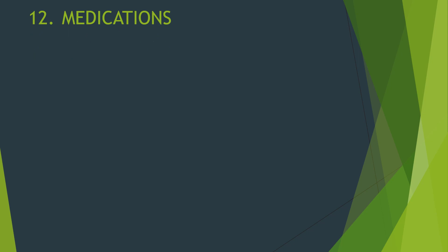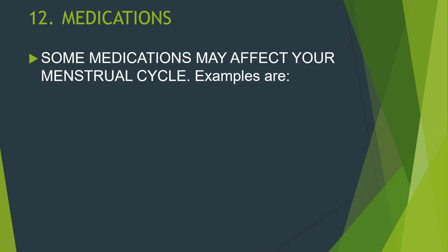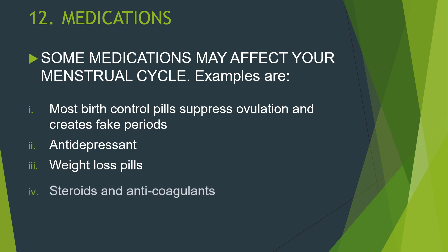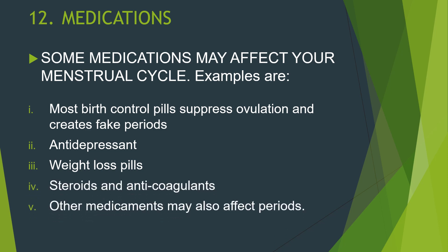Medications are other causes of irregular menstruation. Some medications that could affect your menstrual cycle include most birth control pills — which suppress ovulation and create withdrawal periods — antidepressants, weight loss pills, steroids, and anticoagulants. Other medications may also affect periods. Please contact your doctor if you are experiencing irregular menstruation.